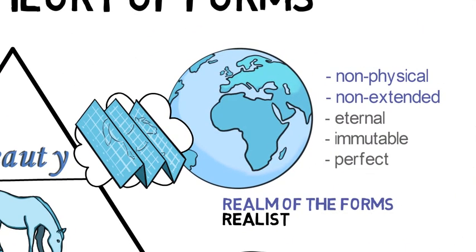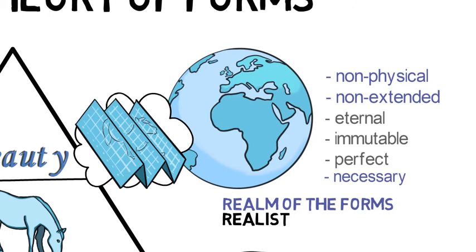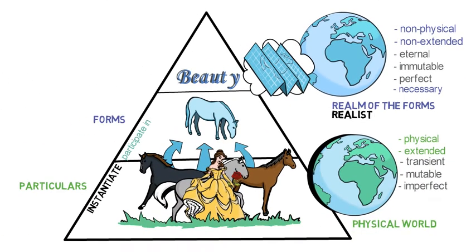Plato argued that the forms must exist necessarily. In other words, they must exist, they can't not exist. Whereas particulars are contingent, meaning they're dependent on forms for their existence. Without the form it wouldn't exist. So they're dependent on them ontologically, and they're dependent on them in terms of being able to be known epistemically.